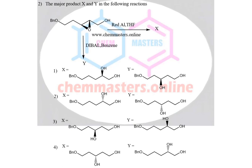So here we are going to analyze it. Now just look at the given epoxide. We have been given a lilac epoxide where the epoxide is showing above the plane of the reactant. Now we apply Red Aluminium in one reaction and in the other we apply diball on the given lilac epoxide. So we should find the correct sequential products.